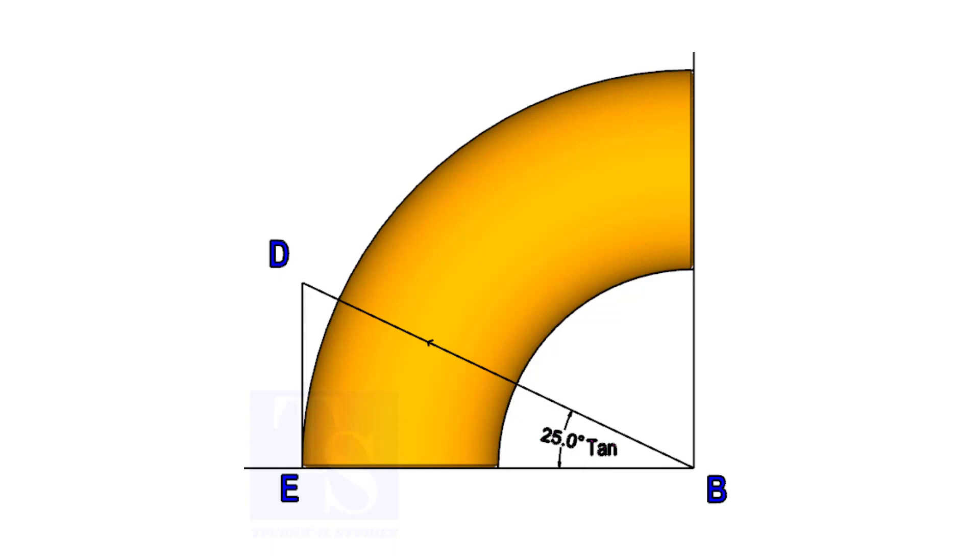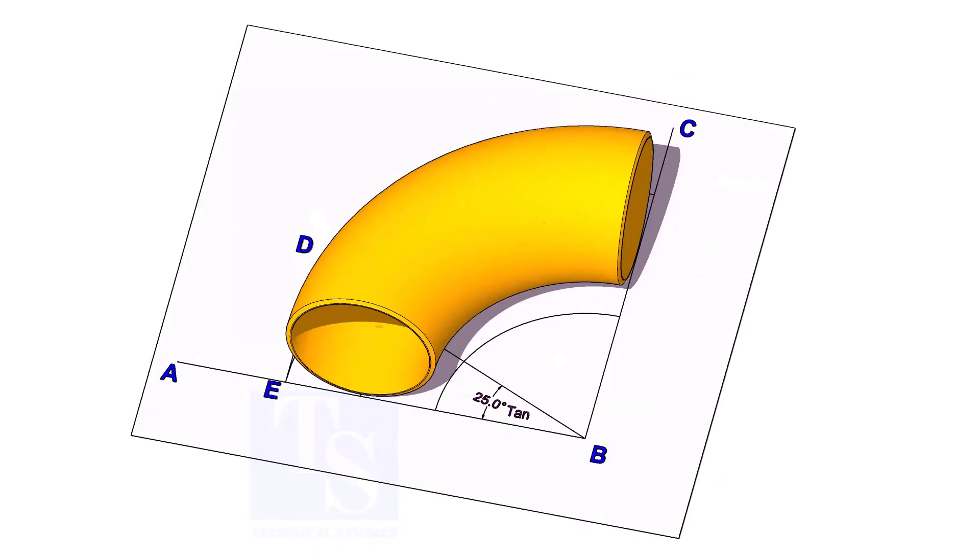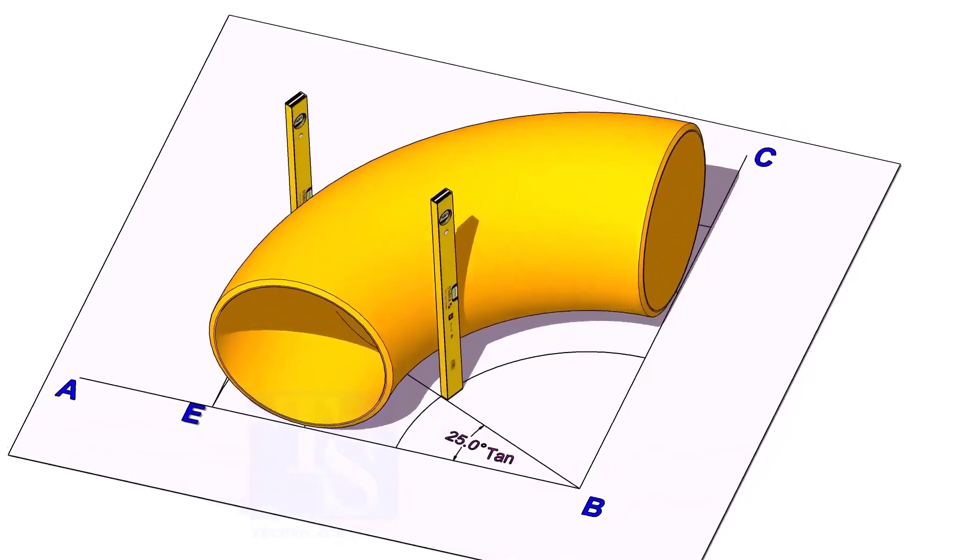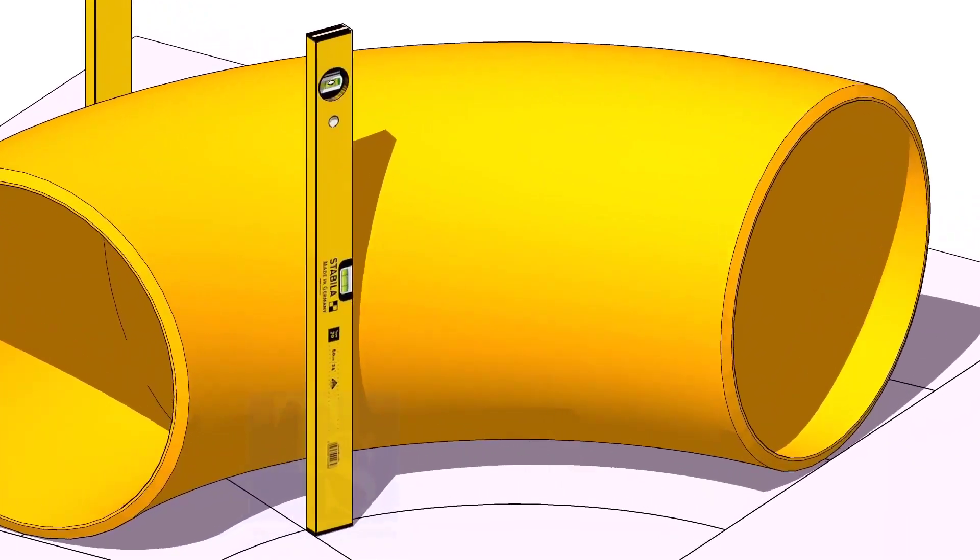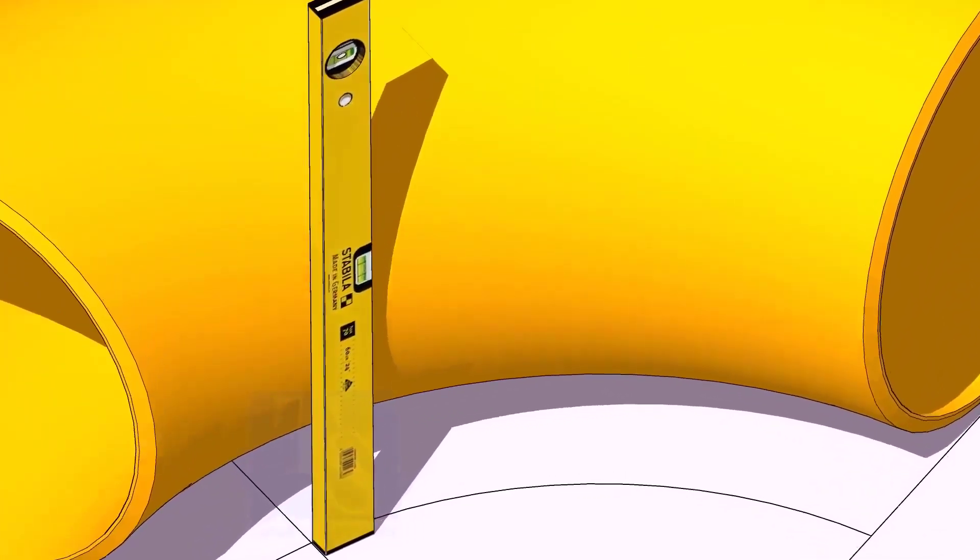Now, put the elbow exactly on the layout as shown. Hold two large level bottles at the edge of the elbow on both sides vertically, and strike a mark where the level bottle edge touches the elbow.